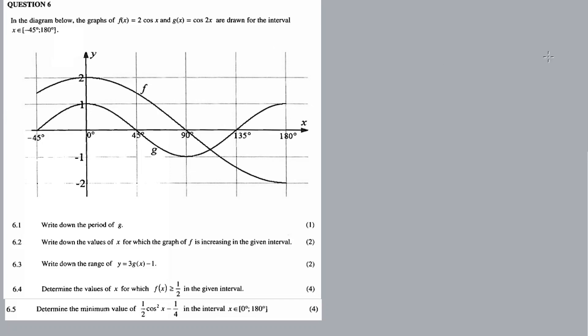All right, now I'm going to tell you question 5, trigonometric functions. There are functions drawn on a system of axes, F and G. They are both cosine functions, and there are sketches for the interval of minus 45 degrees to 180 degrees. In the diagram below, the graphs of F and G are drawn for this interval.